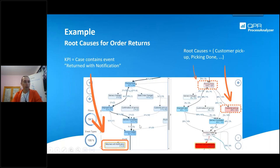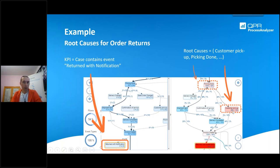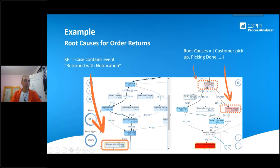Another root cause analysis example: you are getting 5% product returns. You can see the root causes in the flowchart — within customer pickup cases, 40% of the cases being returned had gone through customer pickup, whereas for non-returned cases only 16% went through customer pickup. So it correlates that those who go through customer pickup are more likely to end up being returned. You get this root cause analysis for process steps automatically — that's provided with the tools.